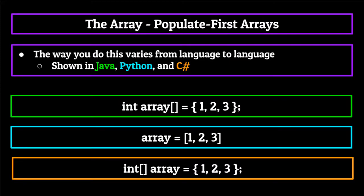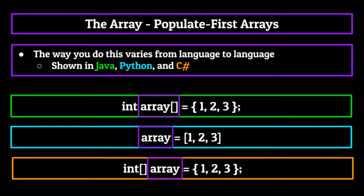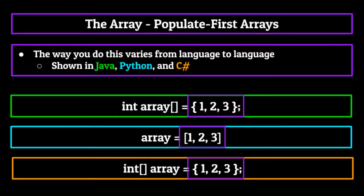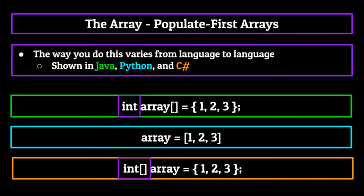All three lines of code on your screen now will create an integer array of size three containing the numbers one, two, and three. You can see that all of them involve the declaration of an array name, which is then set equal to the values you want to include, encapsulated by some sort of brackets or braces. Java and C# require you to define the array type, whereas Python does not. The syntax is generally: name of array, set equal to list of comma-separated values encapsulated by brackets or braces. This also develops the size of the array automatically — since we populate the array with one, two, and three, the array instinctively has a size of three.